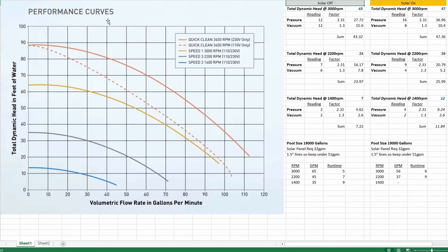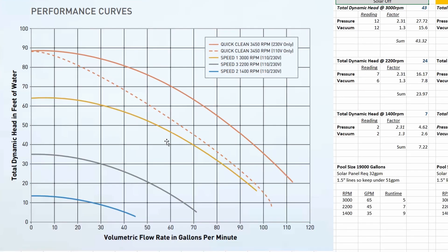Alright, so over here on the left I've pasted the performance curve data for my variable speed Pentair Superflow pump from the instruction manual. And as you can see it has different performance curves for the different RPMs that I've tested under.